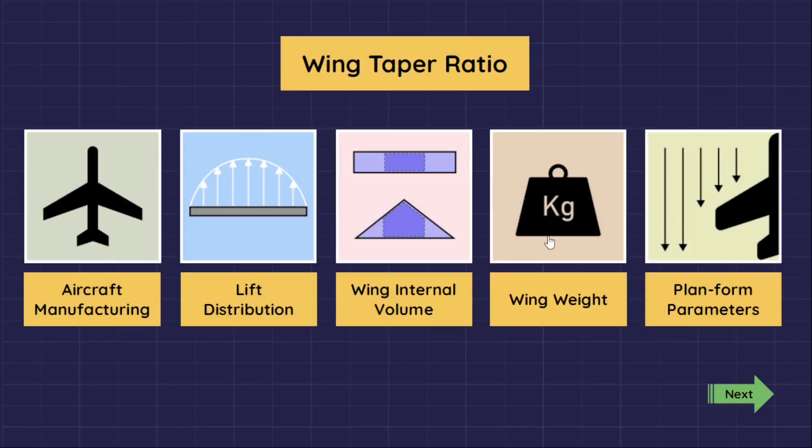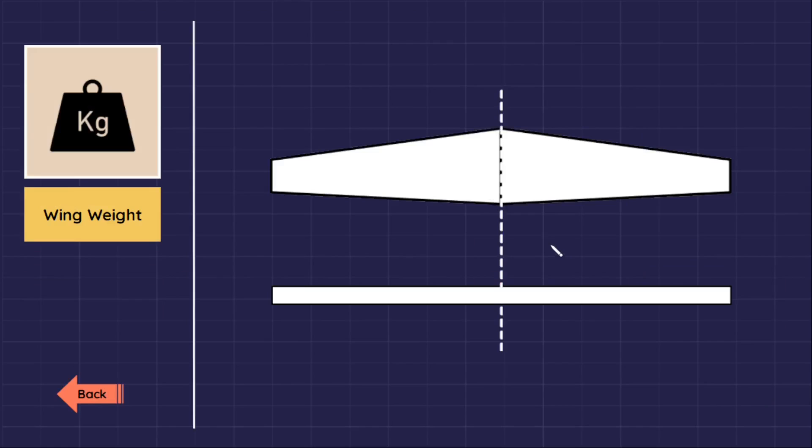Effect of taper ratio on wing weight and wing load. Tapered wing has smaller wing ribs near the wingtip, that means the tapered wing weight is less than a rectangular one. Because of this, the center of gravity of each wing section will move toward the fuselage center line. This results in a lower bending moment at the wing root and lower loading.